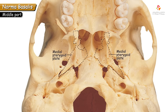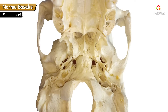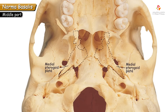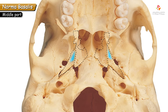The medial plate shows a prolongation called the pterygoid hamulus — named because it is a hammer-like or hook-like prolongation. The groove between the medial and lateral pterygoid plates is the pterygoid fossa. Tracing the medial pterygoid plate near the body of the sphenoid, it splits to enclose a small triangular fossa called the scaphoid fossa, which is distinct from the pterygoid fossa.